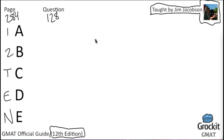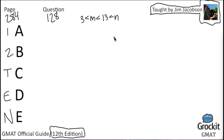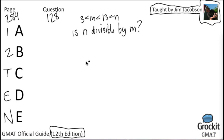Question 128: a school administrator will assign each student in a group of N students to one of M classrooms. If 3 is less than M, and M is less than 13, and 13 is less than N, is it possible to assign each of the N students to one of the M classrooms so that each classroom has the same number of students assigned to it? So really what it's asking is: is N divisible by M?